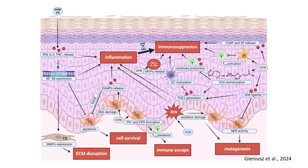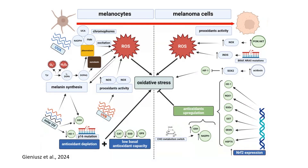Understanding these pathways emphasizes the importance of UV protection in preventing melanoma. This next slide highlights the changes in redox balance between melanocytes and melanoma cells over the course of melanomagenesis. It emphasizes the role of oxidative stress, reactive oxygen species, and antioxidant responses in the progression from normal melanocytes to malignant melanoma cells. On the left, we can see the processes occurring in melanocytes.